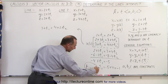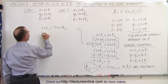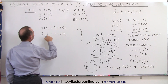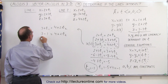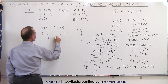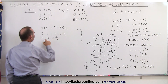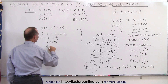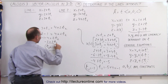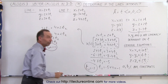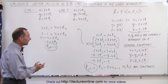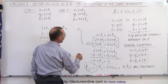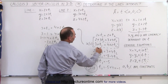Substituting negative 1 in for t1: 3 minus 1 equals 4 plus 2t2. Bringing the 4 across, 3 minus 1 minus 4 equals 2t2. That gives us 3 minus 5, which is minus 2 equals 2t2, so t2 equals negative 1. We've now established that for the two lines to cross, t1 must be negative 1 and t2 must be negative 1, found by setting the bottom two equations equal to each other.